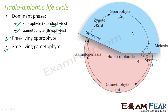So now we understand how plant life cycles are divided into haplontic, diplontic, and haplodiplontic — it depends on which phase is dominant. If the diploid phase (sporophyte) is dominant, it is diplontic. If the haploid phase (gametophyte) is dominant, it is haplontic.